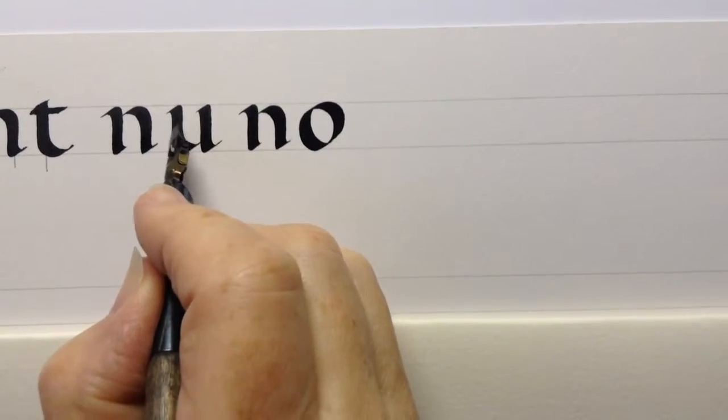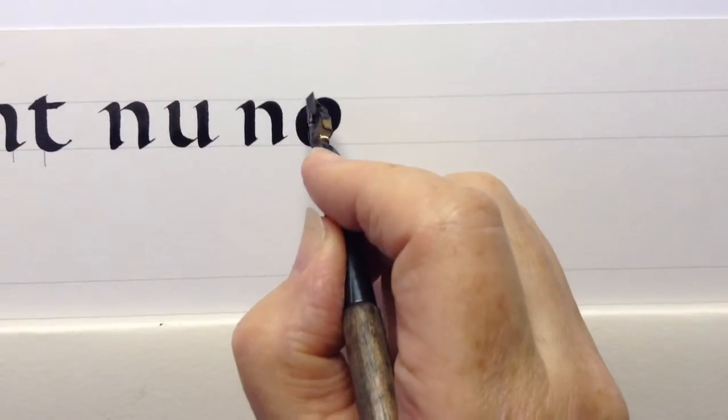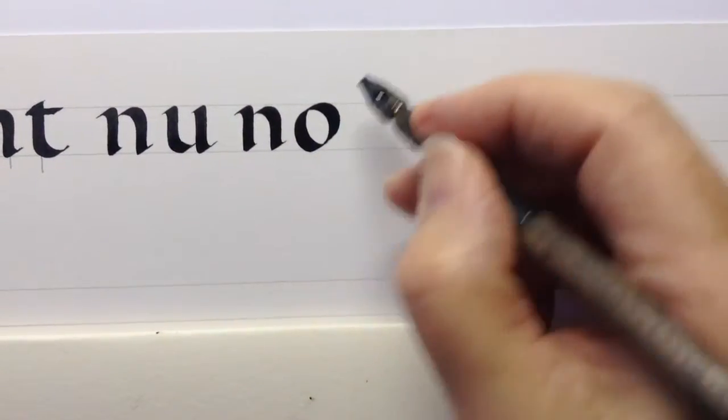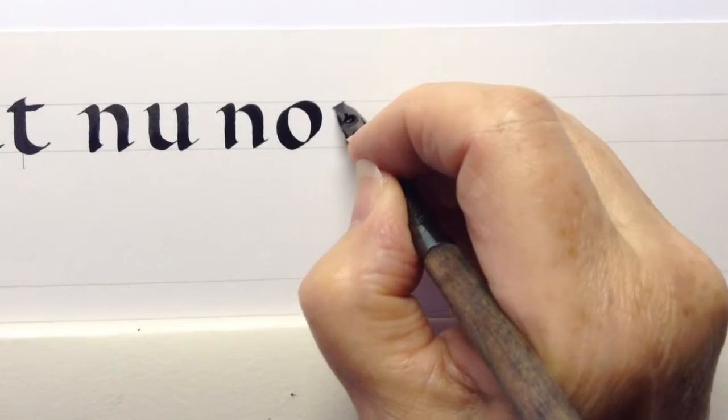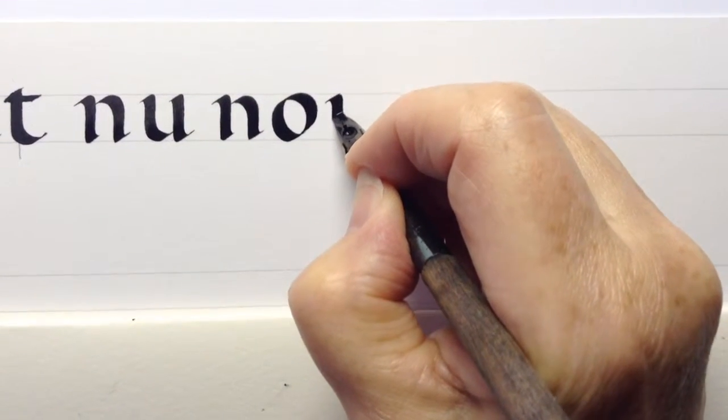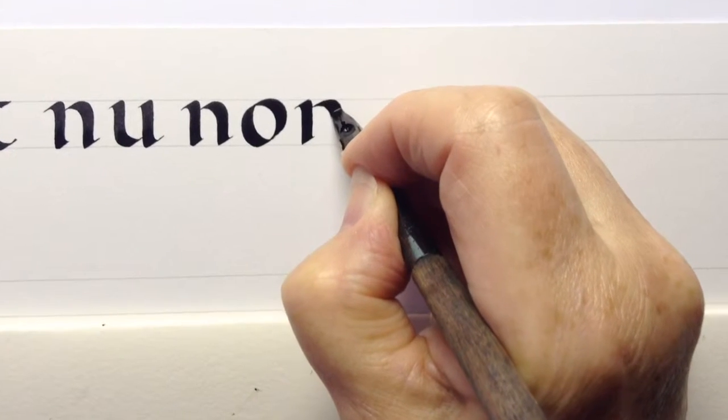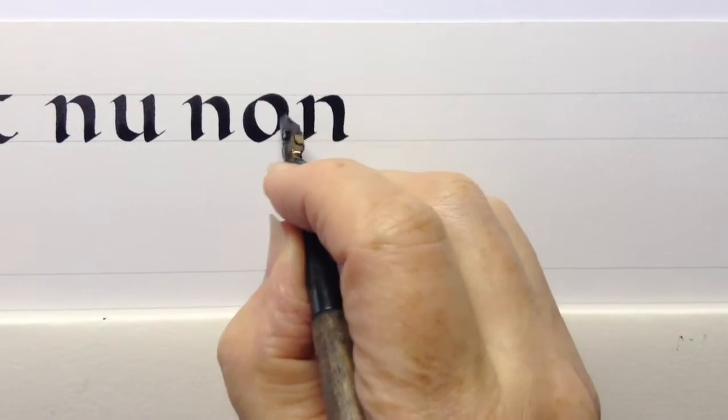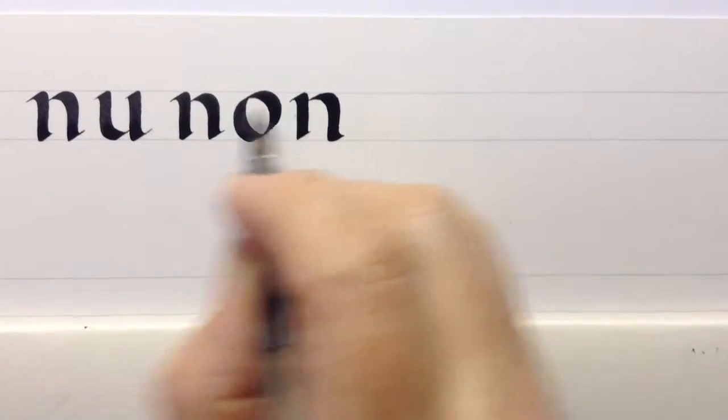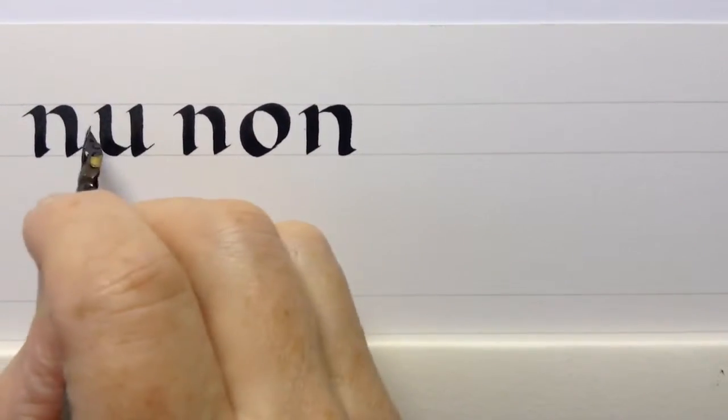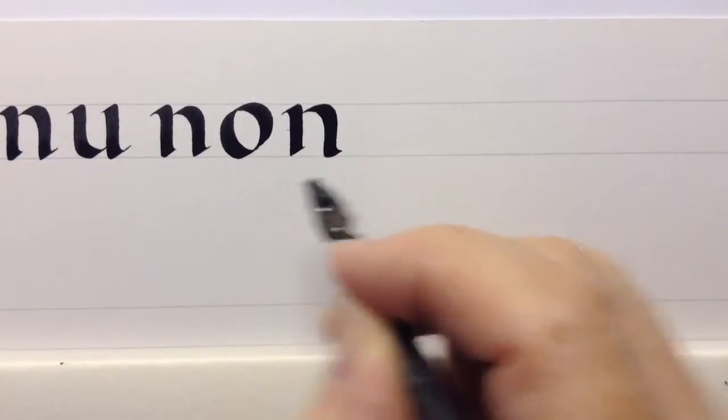But you have all this white space here and here that you need to take account of. And so when we write our next letter, that is actually closer together. That space is closer than that space and that space, but it looks about the same.